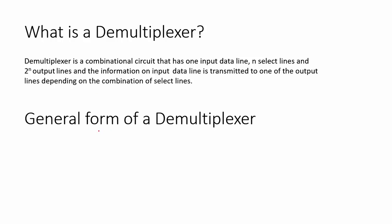So what is the general form of a demultiplexer? Similar to the multiplexer, the general form of the demultiplexer is 1-to-2^n. The number of inputs to the demultiplexer is always 1, whereas the output is 2^n, where n is the number of select lines.